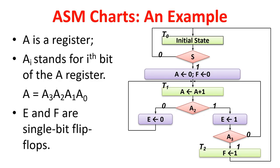A is a register and Ai stands for the i-th bit of A — A3, A2, A1 and A0. E and F are single-bit flip-flops. Initially the system is in state T0. Once start is 1, real operations begin; otherwise it stays in state T0. When S is 1: initializing — A is set to 0 and F is set to 0 — clearing the counter and flip-flop F. Every cycle, A = A + 1, then it checks A2: if A2=0 then E=0; if A2=1 then E=1.